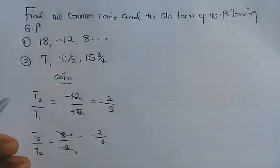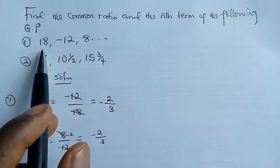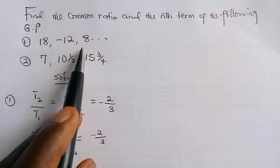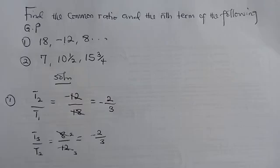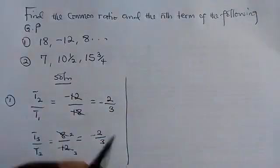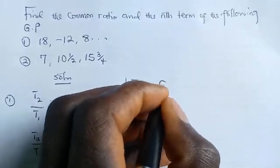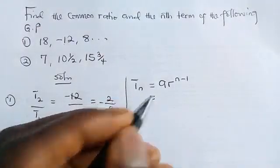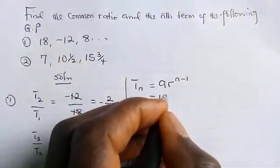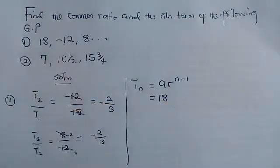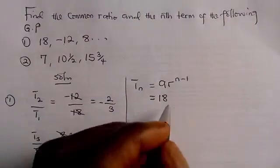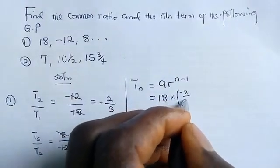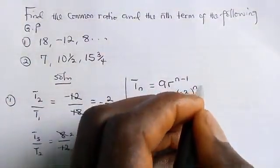We have now found the common ratio for the first sequence. Next, we need to find the nth term of that GP. To get the nth term of a geometric progression, the formula is: Tn equals the first term multiplied by the common ratio raised to the power of n minus 1. Our first term is 18, and r has been found to be minus 2 over 3, raised to the power of n minus 1.